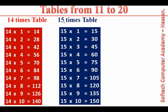15 times table. 15 ones are 15. 15 twos are 30. 15 threes are 45. 15 fours are 60. 15 fives are 75. 15 sixes are 90. 15 sevens are 105. 15 eights are 120. 15 nines are 135. 15 tens are 150.